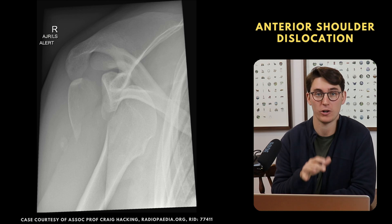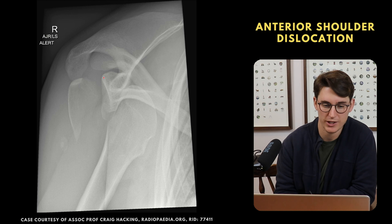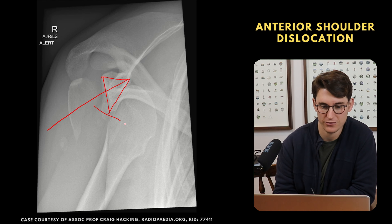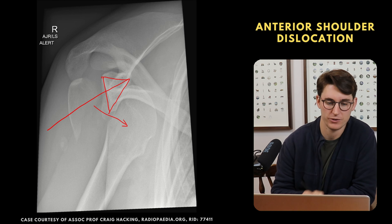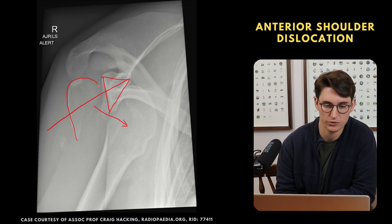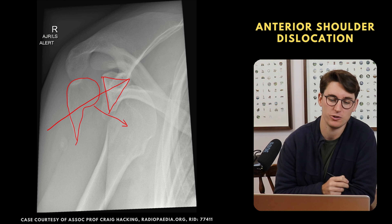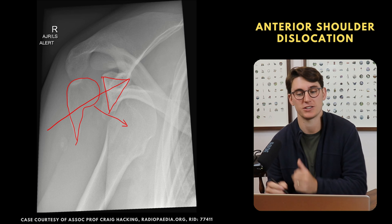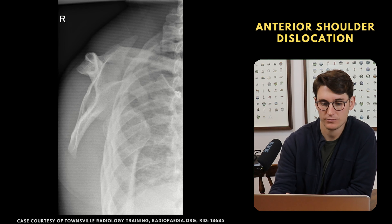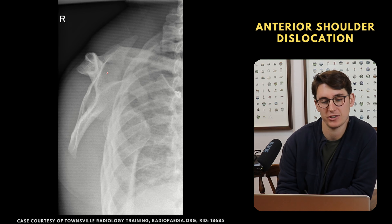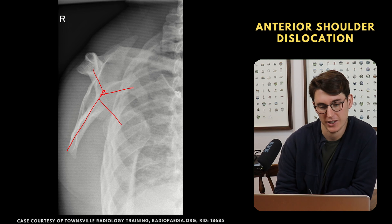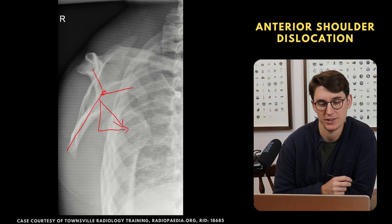On our apical oblique view, if we draw that triangle and cut the line forward, we can see that the humeral head is far anterior to the glenoid fossa. In this case we also have a fracture dislocation — a large portion of the humeral head has been fractured off the main humerus and left behind. This is a complex fracture dislocation with anterior dislocation of the shoulder. On the Y view of an anterior dislocation, the humeral head is far anterior and inferior to the patient — that's a classic anterior dislocation.